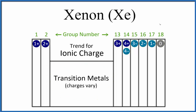When we get to group 18, this is where xenon is — about right here in group 18. We have an ionic charge of 0, because xenon doesn't form bonds with other elements, except perhaps under extreme conditions. So we consider all of the elements in group 18 to have an ionic charge of 0 because they really don't form bonds.